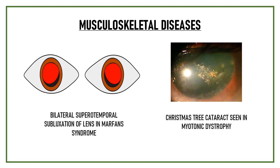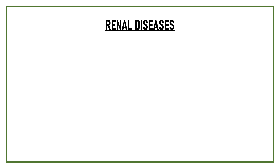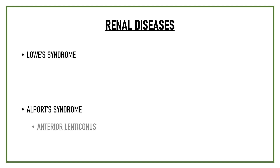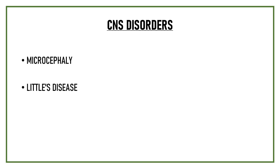Christmas tree cataract is seen in myotonic dystrophy. Renal diseases associated with cataract are Lowe's syndrome and Alport's syndrome. Anterior lenticonus is seen in Alport's syndrome, and Lowe's syndrome causes an anterior capsular cataract. Cataract formation is also seen in a few CNS disorders like microcephaly, Little's disease, and neurofibromatosis type 2.